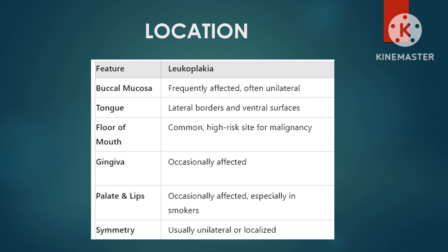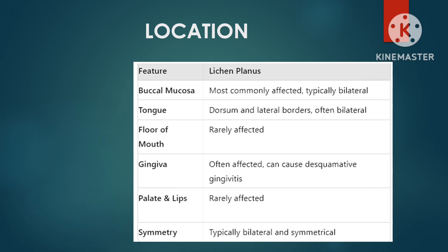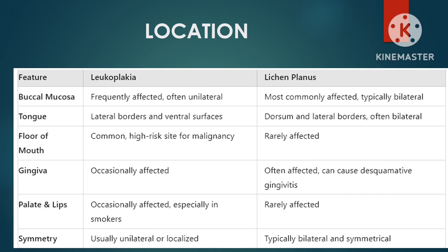The common sites affected by oral lichen planus include the buccal mucosa — similar to leukoplakia, the inner cheeks are a common site, often with a lacy appearance. The gingiva, or gum tissues, can also show white lacy lesions or the erosive form of lichen planus. On the tongue, white patches or erosions can appear on the tongue surface. The palate may also be involved, presenting with white streaks or sores.